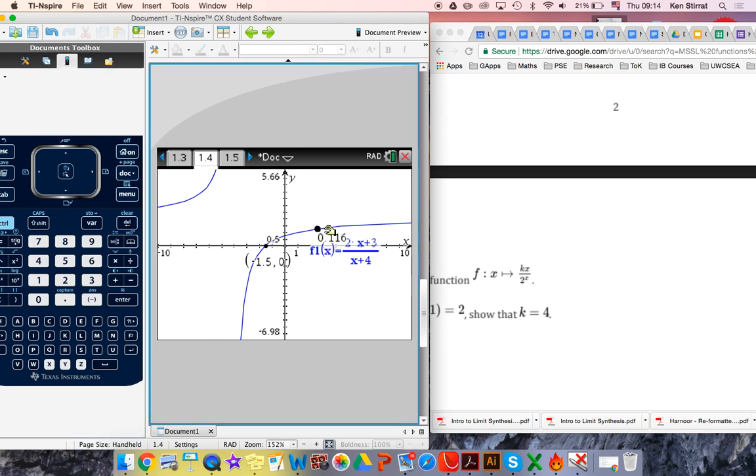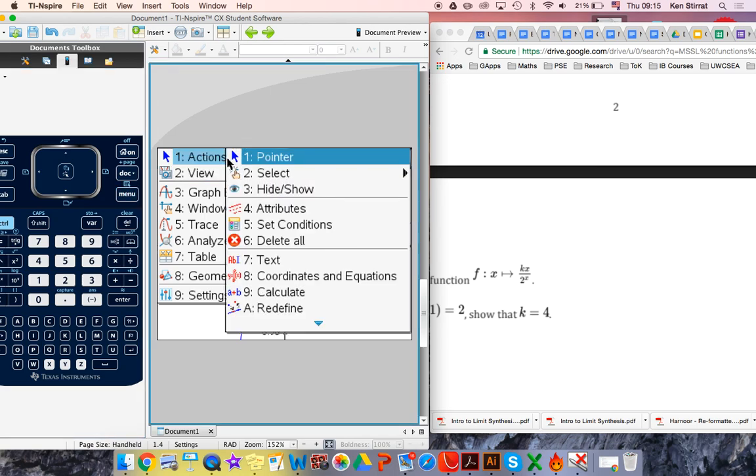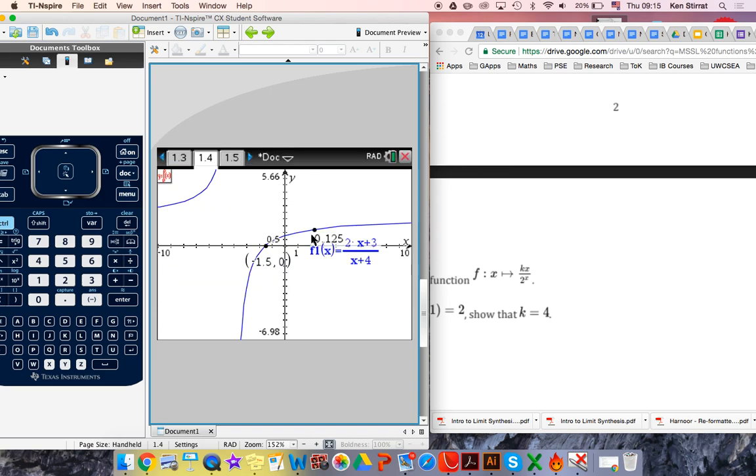The problem is when we move this point, we don't know what the x coordinate is. We have a fix for that. Menu, Actions, Coordinates and equations. This is the magic button. Click on the coordinate equations. Click on the point. And press one more time. And as I press escape to take off that tool, as I grab this point, I can now see the coordinates of it.